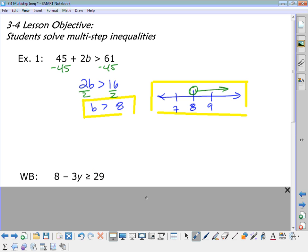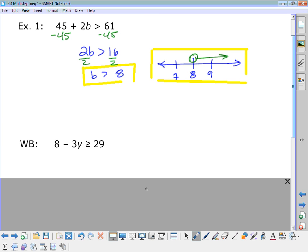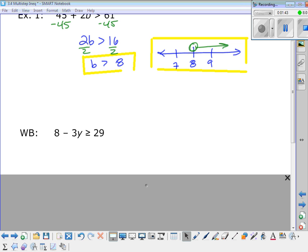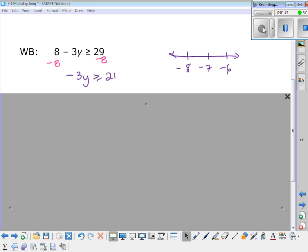All right, on your whiteboards then, I would like you to attempt this one. Okay, so you had 8 minus 3y is greater than or equal to 29.